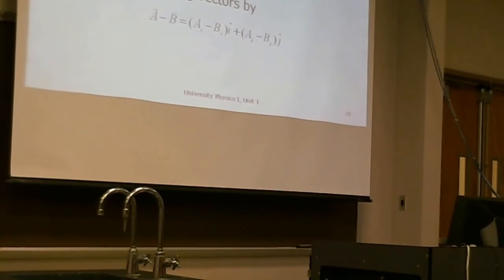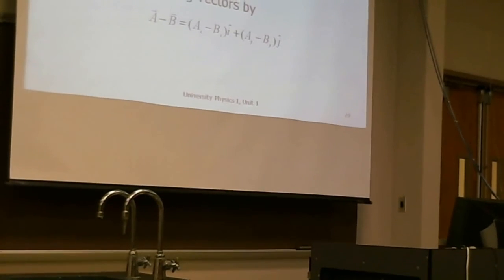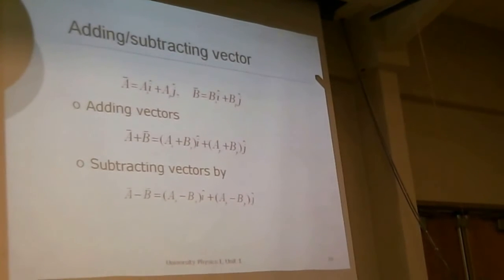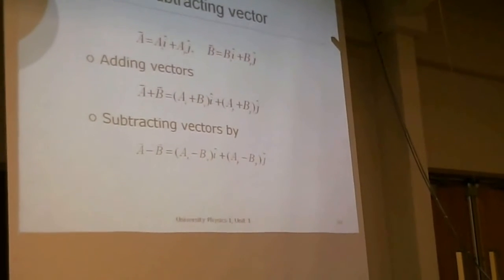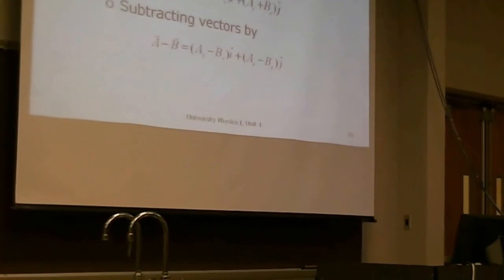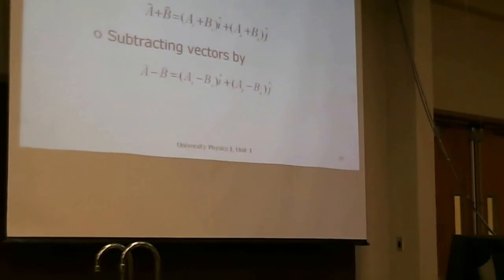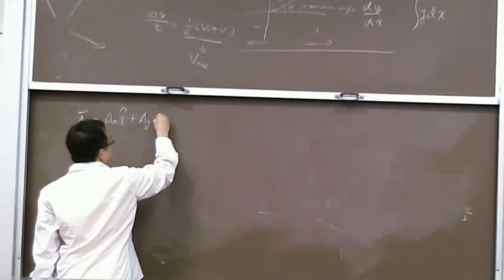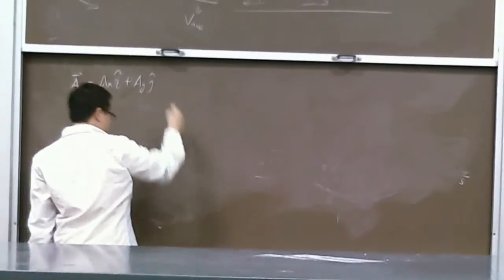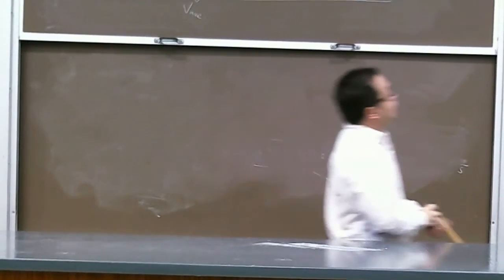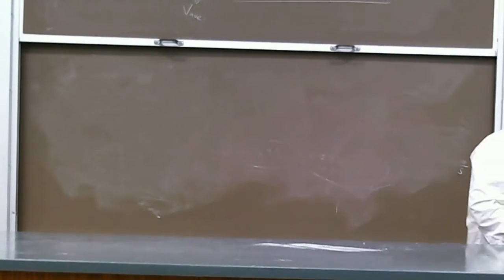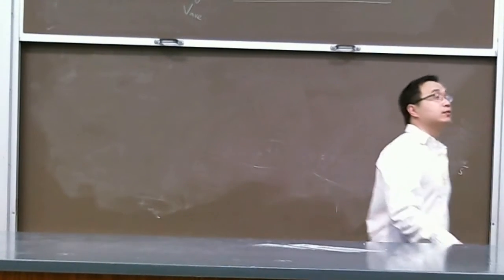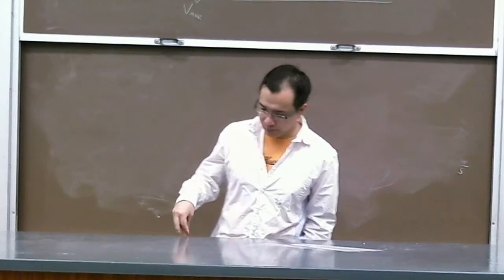Now, in terms of our notation here, you can see if I have two vectors, I can record it as A equals to Ax i-cap plus Ay j-cap. B equals to Bx i-cap plus By j-cap. To add the vectors, if you have taken the 1370, you know that to add two vectors, we have to add x-components and y-components separately.